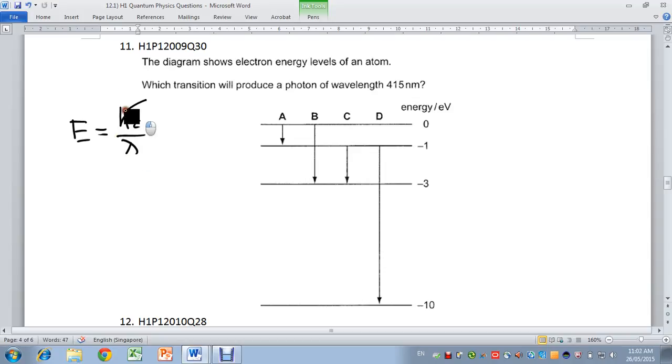We substitute in the necessary values. We should be able to find the energy level E in terms of joules. We will find the energy in joules, and if we divide this by 1.6 times 10 to the power of minus 19, you will get the answer in terms of eV. And that will help us decide which transition level gives this wavelength.